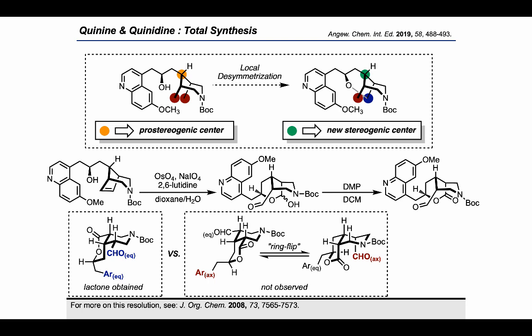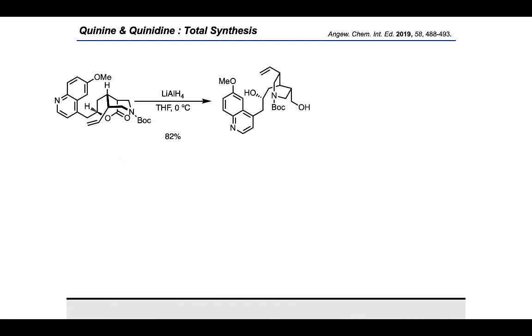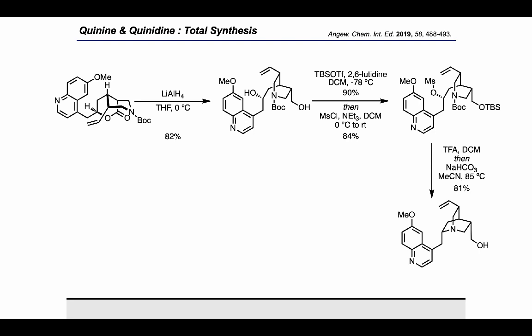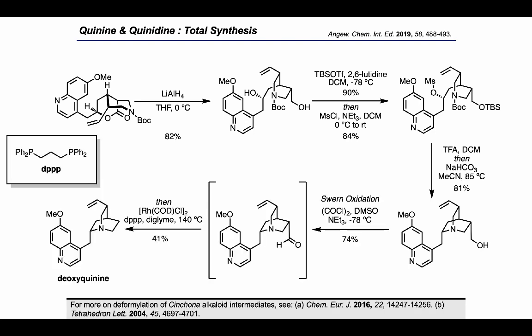If the secondary alcohol had cyclized onto the other aldehyde, we would have had to place one of the substituents in an axial position. Moving on, the authors used the pendant aldehyde, which contains a carbon that was formerly one of the diastereotopic carbons in the internal alkene, to form a terminal alkene using Julia-Kocienski olefination. The lactone was then reduced all the way down using lithium aluminum hydride to give this diol. The primary alcohol was protected as the TBS ether and the secondary alcohol was activated as the mesylate to close the quinuclidine ring. They removed the Boc group with TFA and treated with bicarbonate and acetonitrile with heating to effect cyclization. A Swern oxidation converted the primary alcohol to the aldehyde, and then a rhodium-catalyzed deformylation was used to arrive at deoxyquinine.